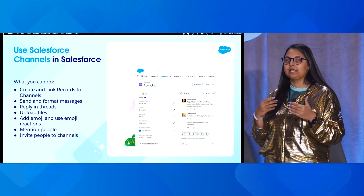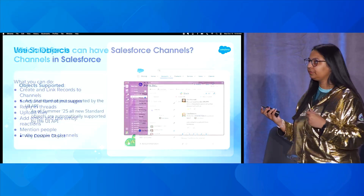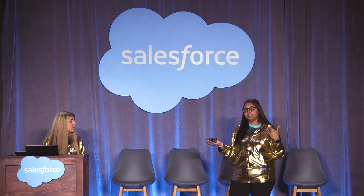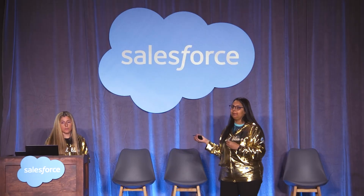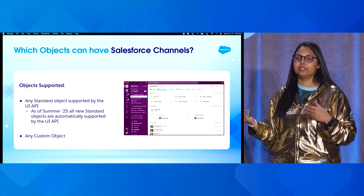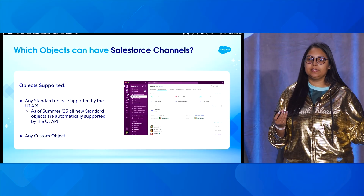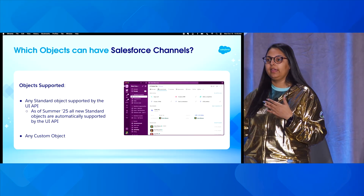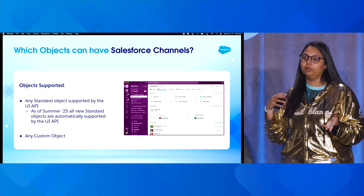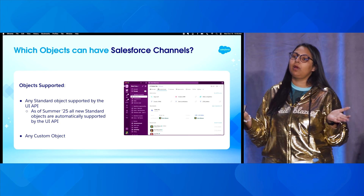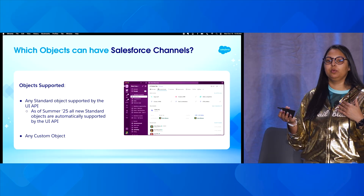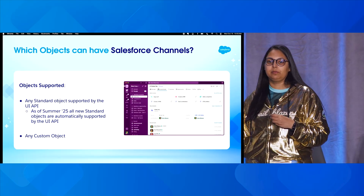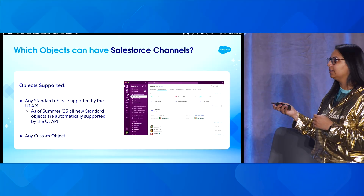It's seamless collaboration between Slack and Salesforce. You might be wondering which objects have access to this — all standard Salesforce objects that are UI API enabled can have their own dedicated Salesforce channels. Any custom object you've created for your org can also have a Salesforce channel. It's totally up to you which objects you want to enable Salesforce channels for.